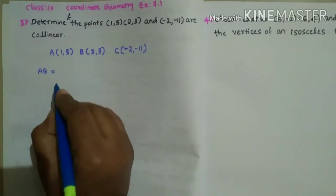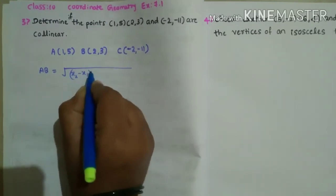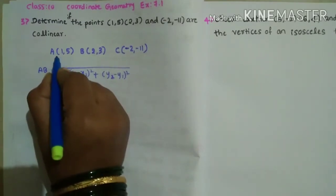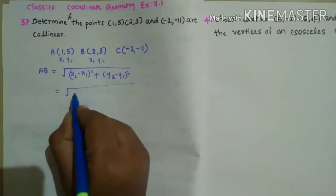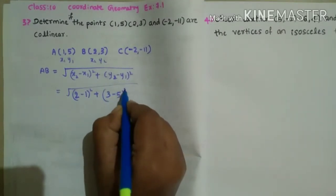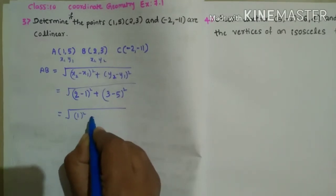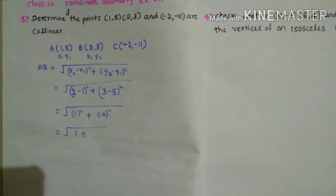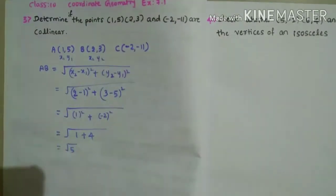To find the length of AB, the formula is: square root of (x2 - x1)² + (y2 - y1)². Take A as (x1, y1) and B as (x2, y2). Substituting: x2 is 2, x1 is 1, so (2-1)² = 1²; y2 is 3, y1 is 5, so (3-5)² = (-2)² = 4. So AB = √(1+4) = √5.